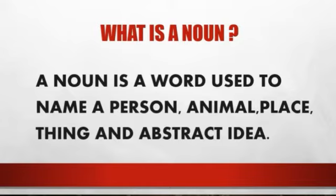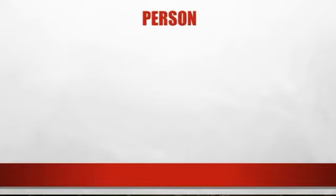What is a noun? A noun is a word used to name a person, animal, place, thing, or an abstract idea. When we talk about abstract ideas, these are our emotions and feelings. We cannot see or touch these feelings, but we can feel them. So nouns are names of persons.